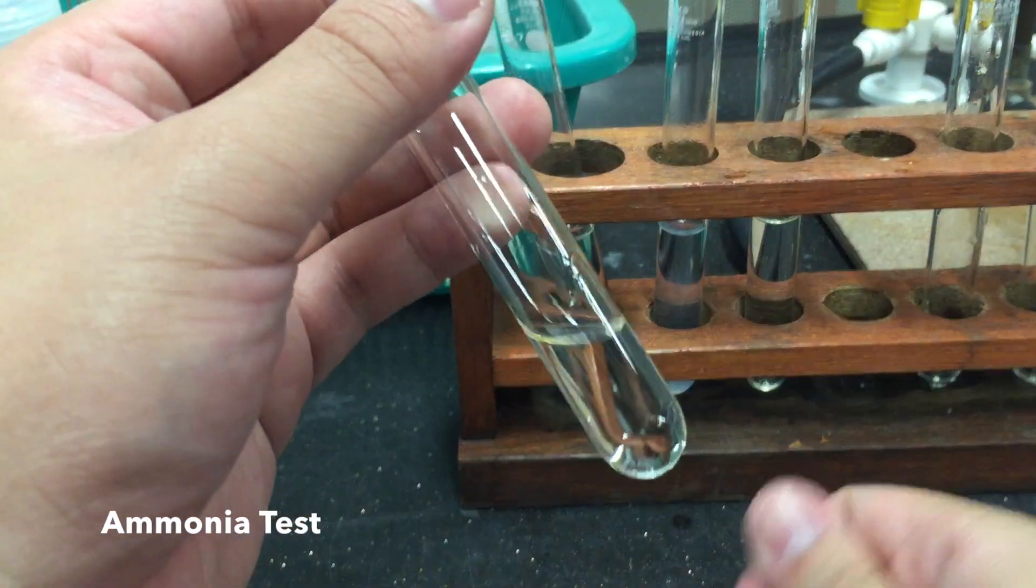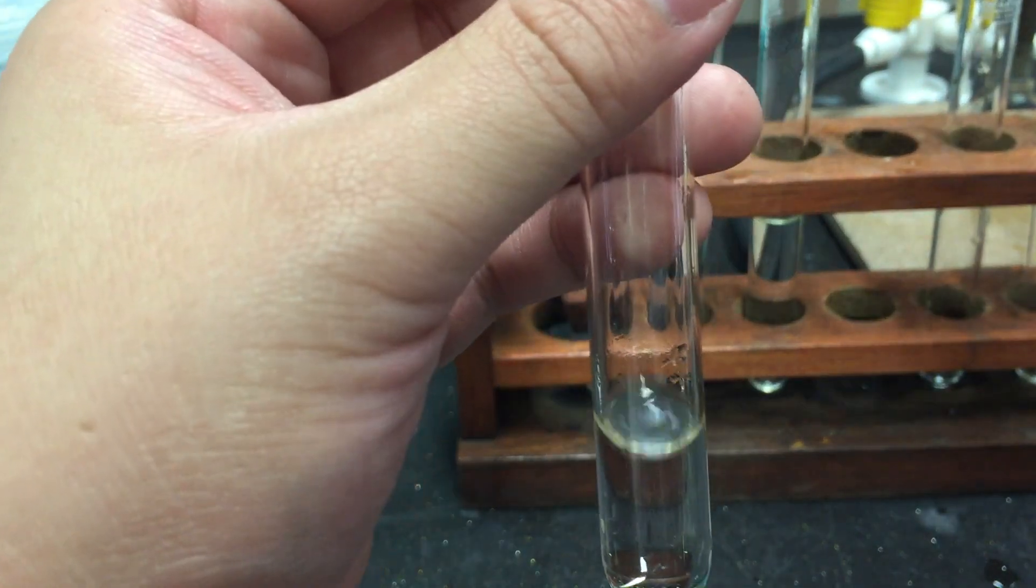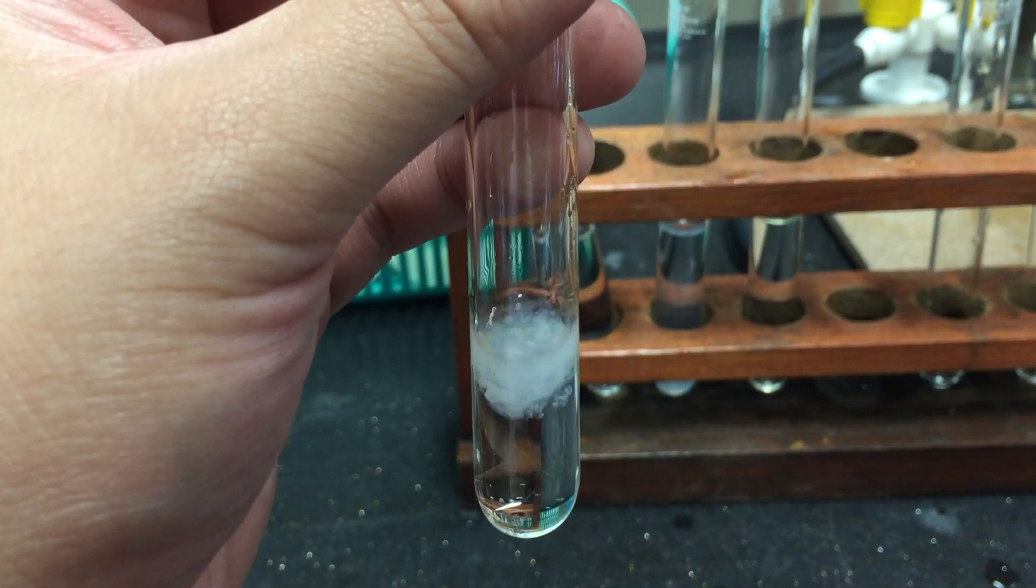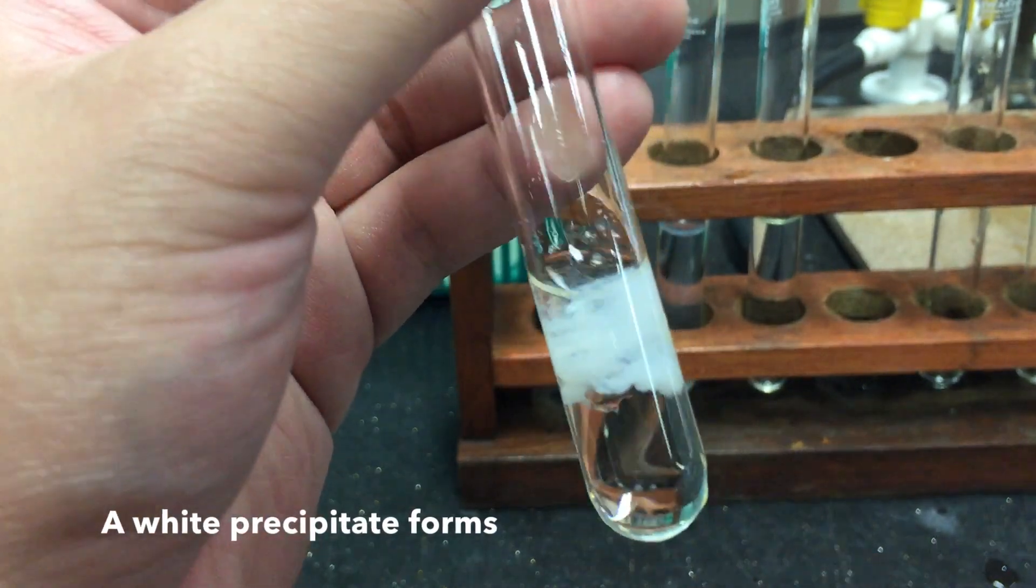We may also use the ammonia test. To a small sample of your solution, add a few drops of ammonia solution. Notice how a white precipitate forms.